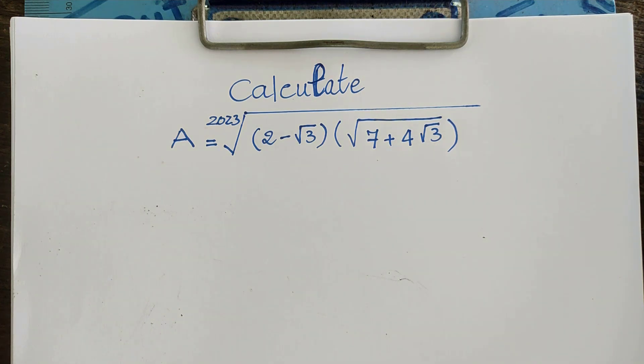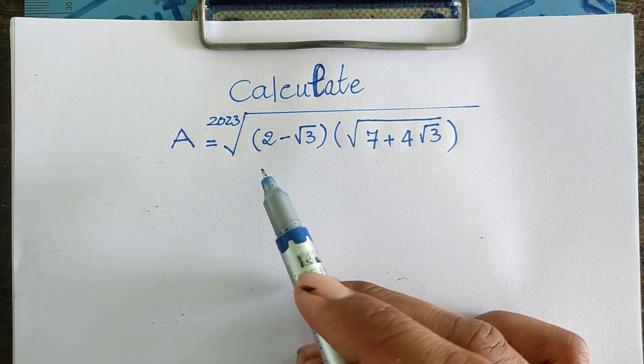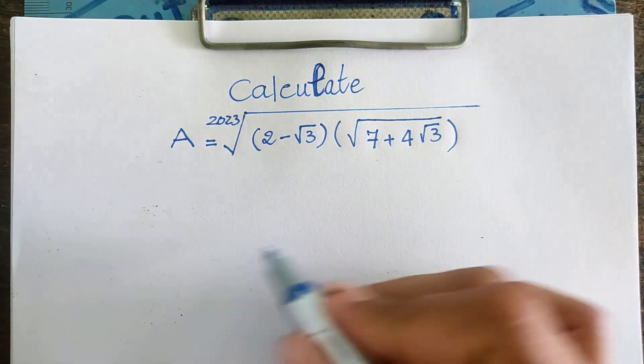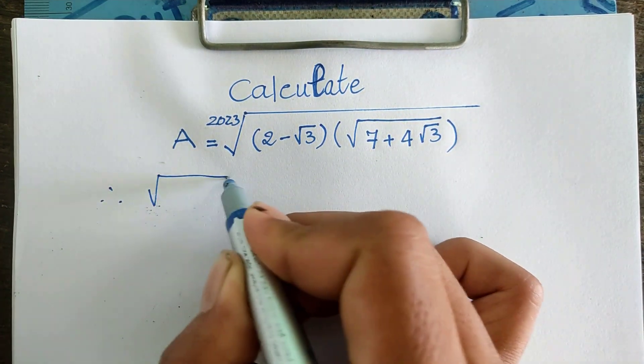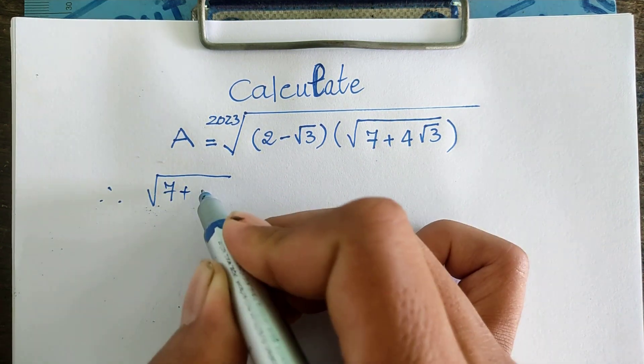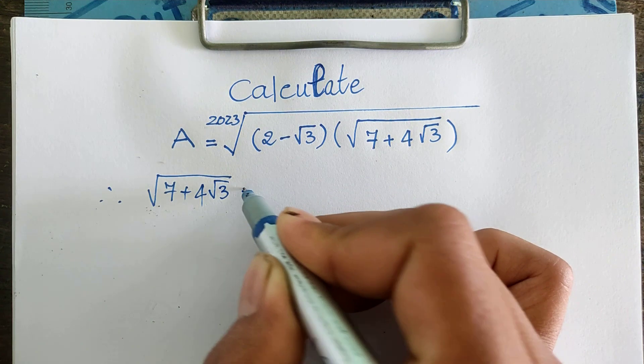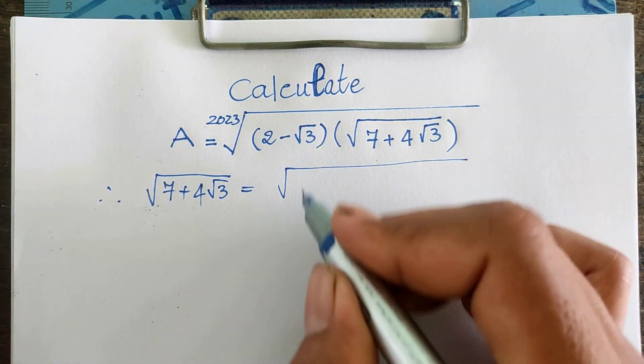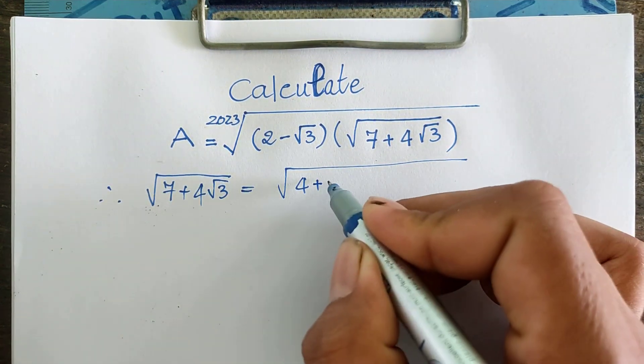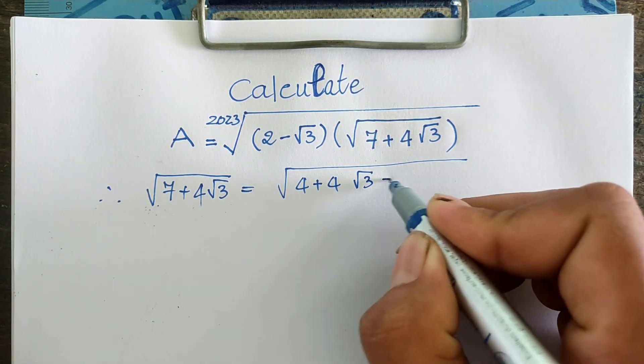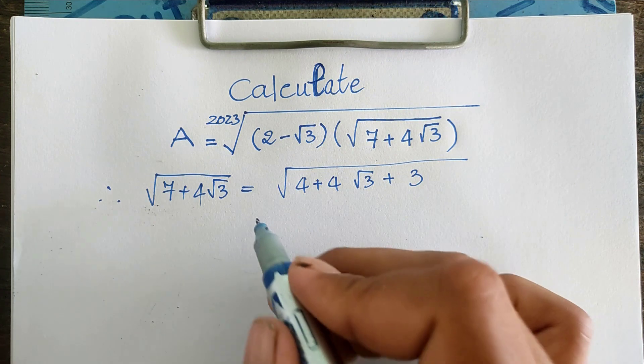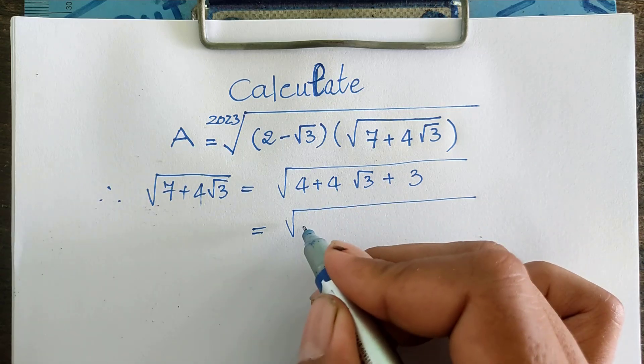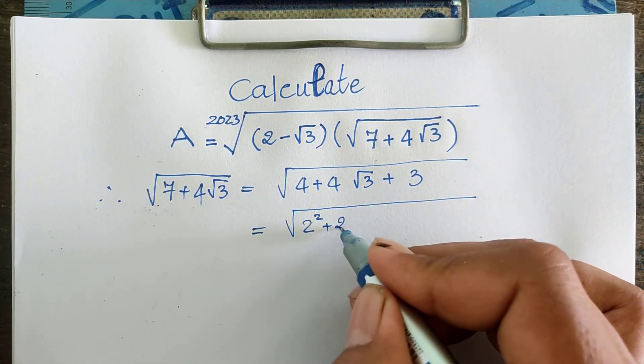Now we go to the solution together. To evaluate this equation, I use this part. You know that the square root of 7 plus 4 square root 3 can also be written as 4 plus 3. I can write it as 4 plus 4 square root of 3 plus 3. Also, this equals the square root of 4—I can write it 2 squared—plus 2 times 2 times square root of 3, and...